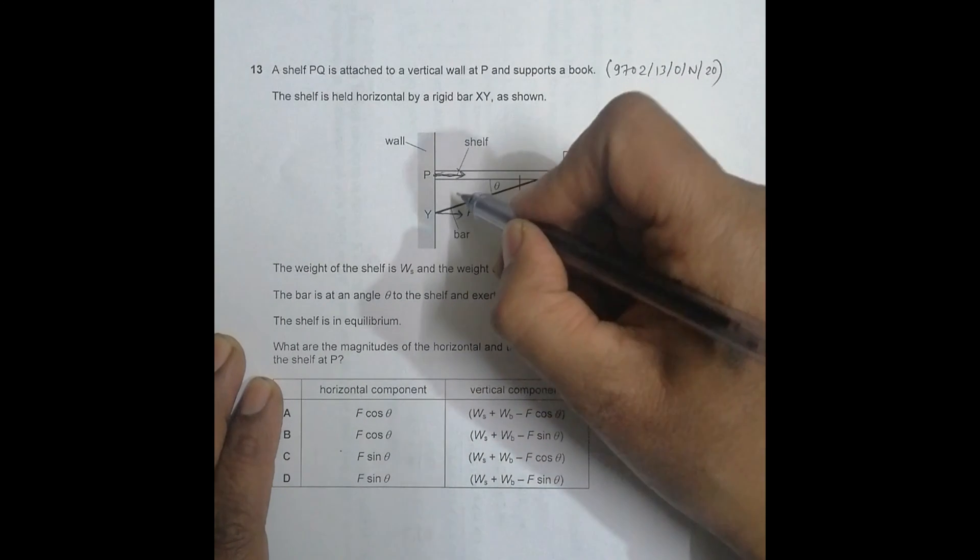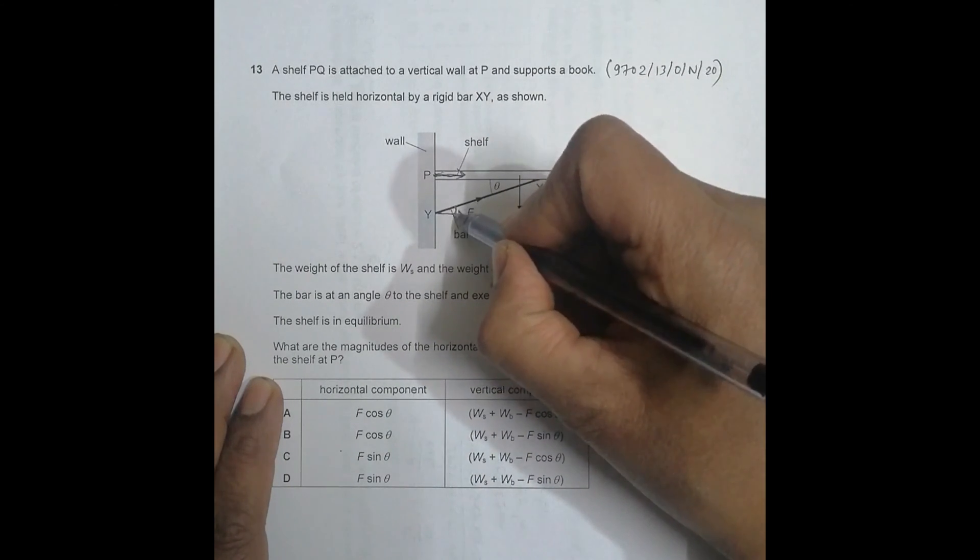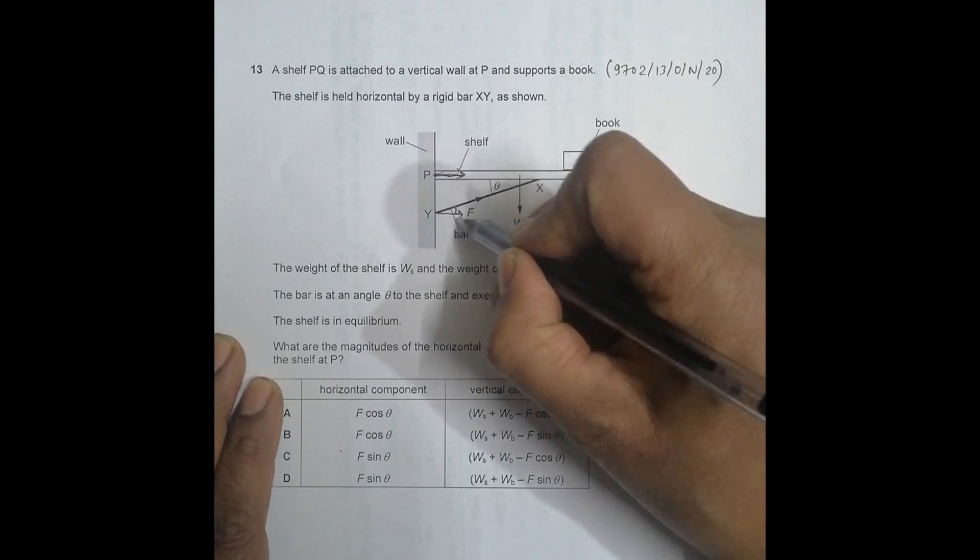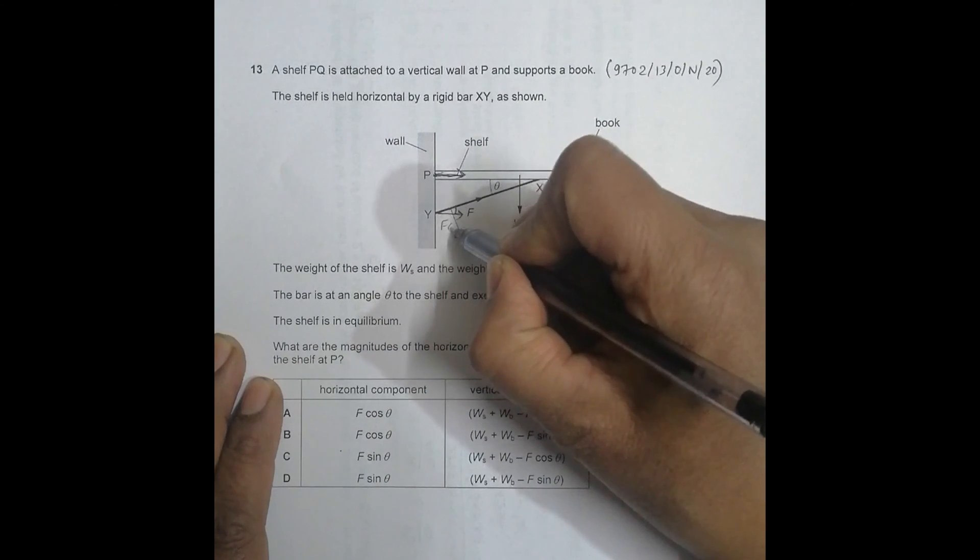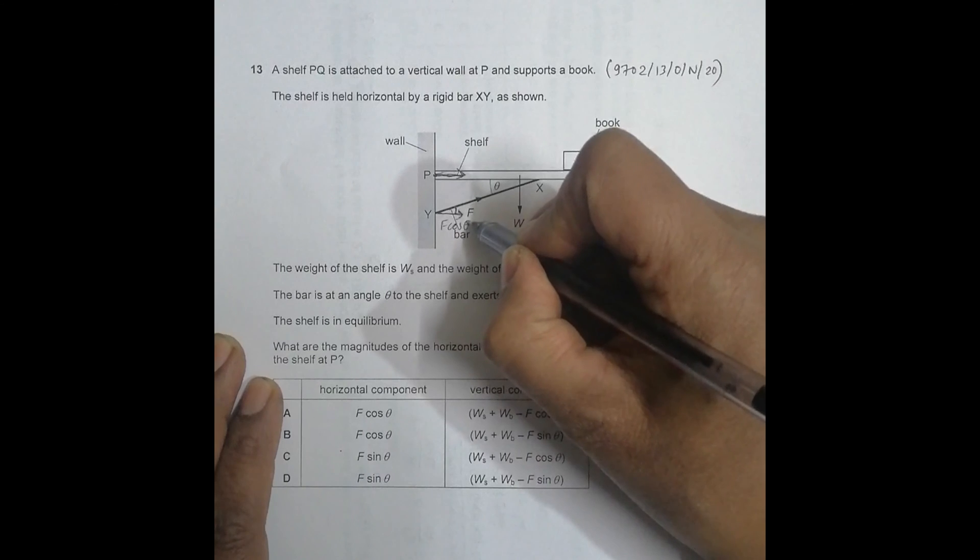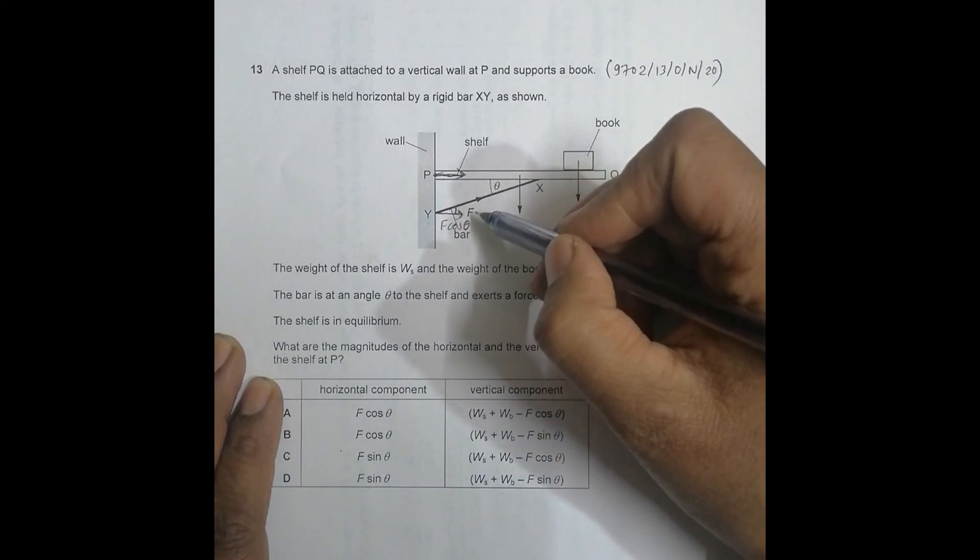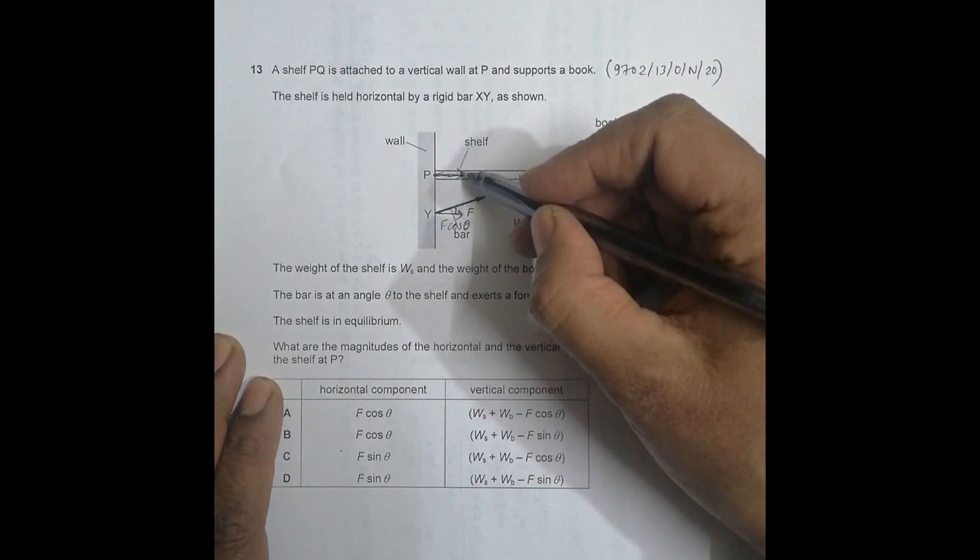This angle is theta by alternate angles. So it should be F cos of theta. Since the whole system is in equilibrium, it should be F cos theta.